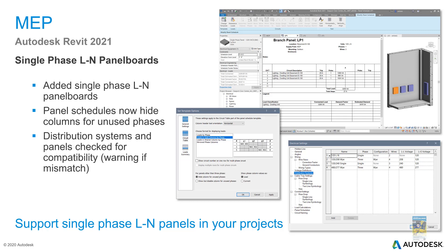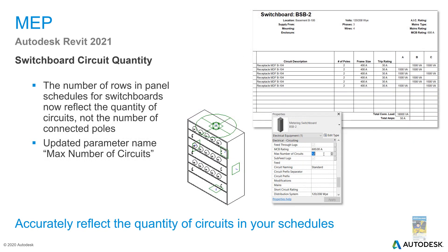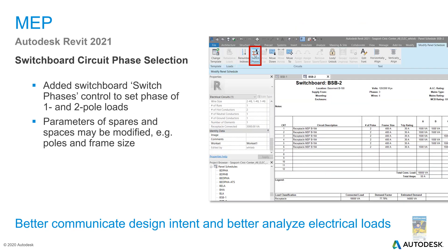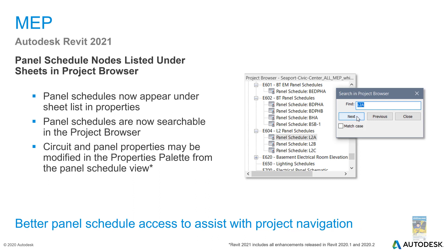Distribution systems and panels are checked for compatibility and will give you a warning. The switchboard circuit quantity — the number of rows in panel schedules for switchboards — now shows the quantity of circuits rather than the number of connected poles. A switch phases control sets up phases of one and two pole loads, and spare and space parameters like poles and frame sizes can be modified. Panel schedules now appear under the sheet list in properties and are searchable in the project browser.